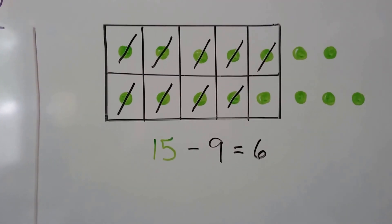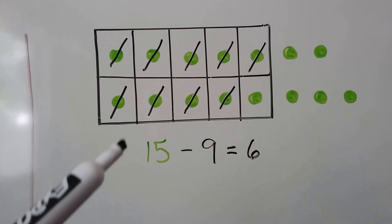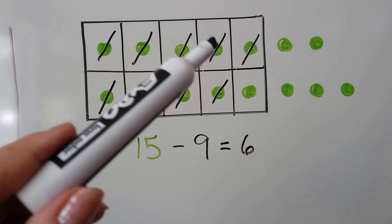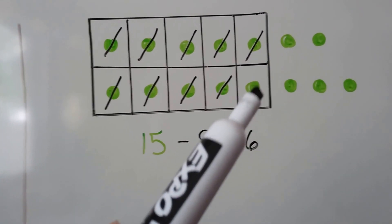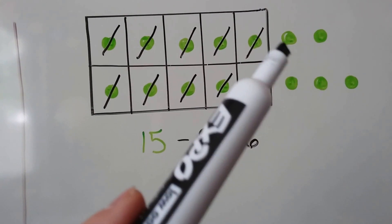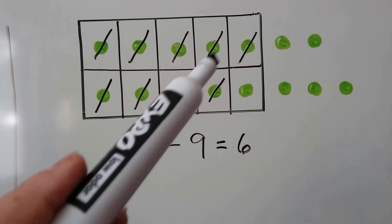Now we have 15 green counters. We need to subtract 9, so we cross 9 of them out or remove 9 of them: 1, 2, 3, 4, 5, 6, 7, 8, 9. That leaves 1, 2, 3, 4, 5, 6.